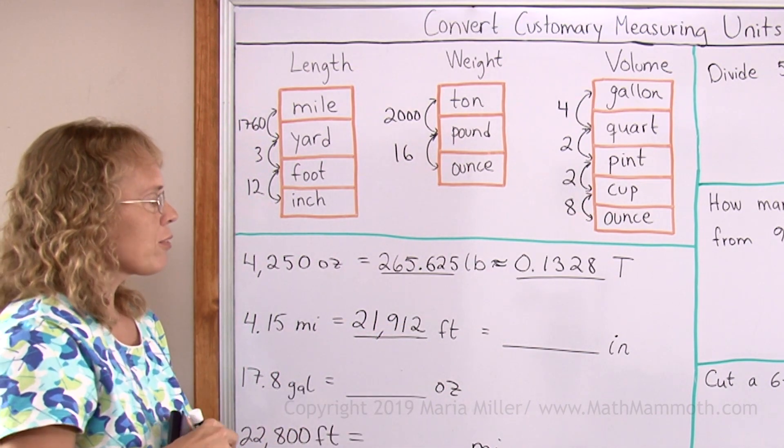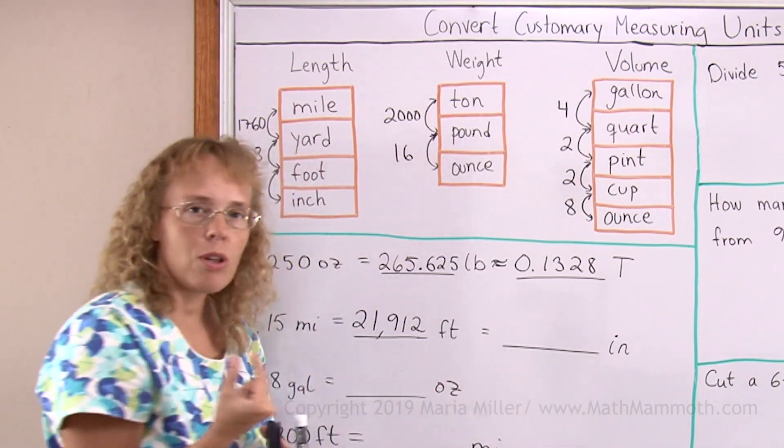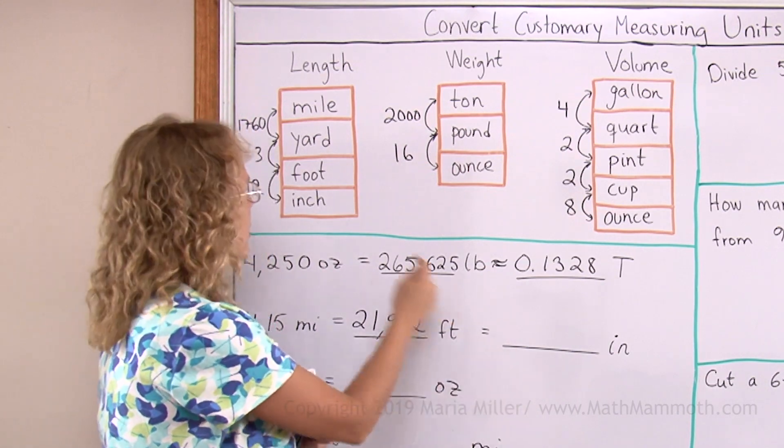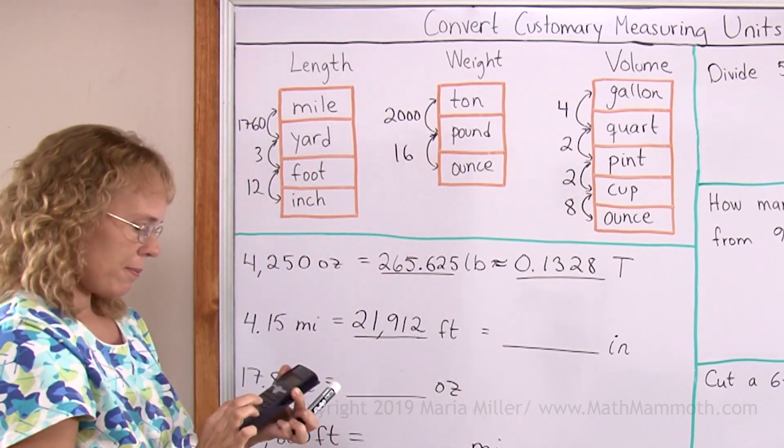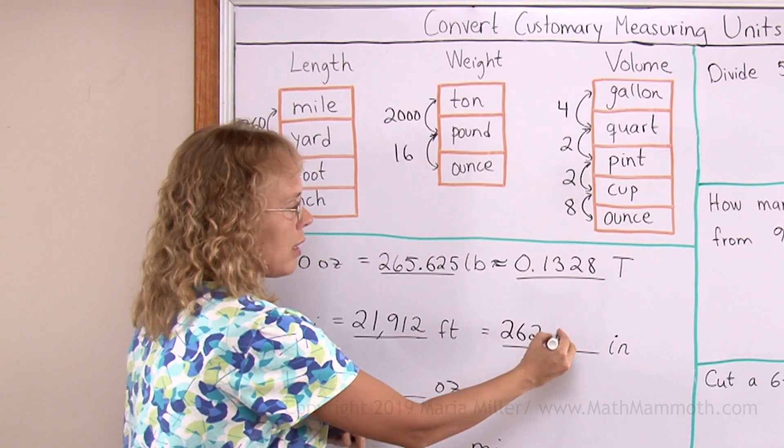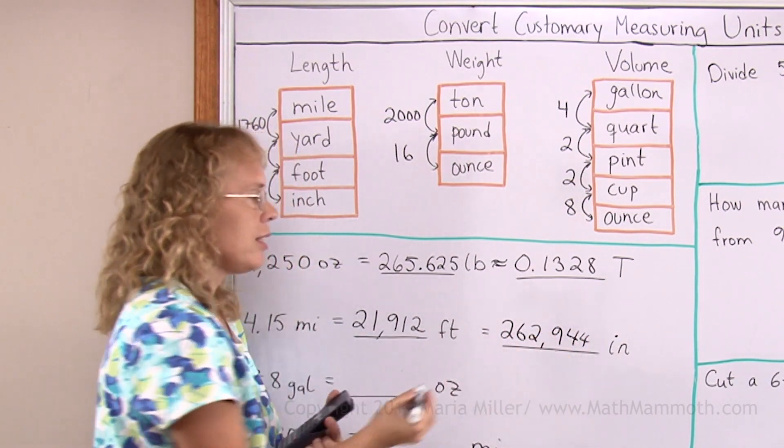Now if I go from feet to inches, inches are even smaller units. I need even more of them. I need to still multiply this by 12. So this is now 262,944 inches.